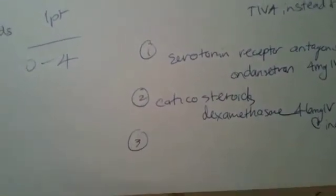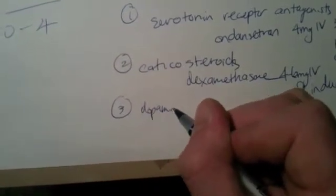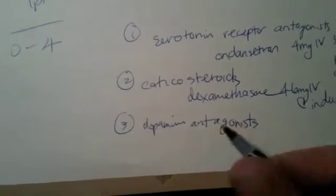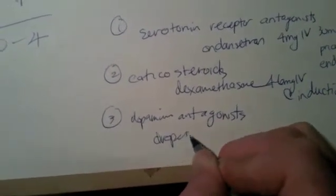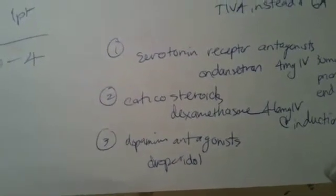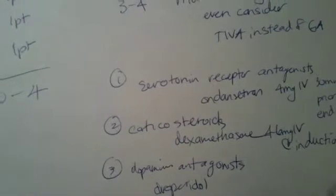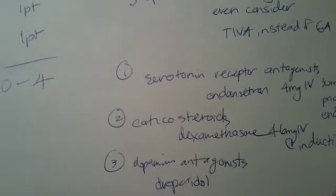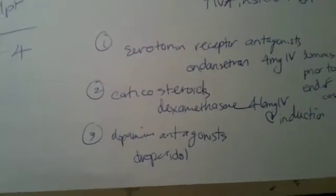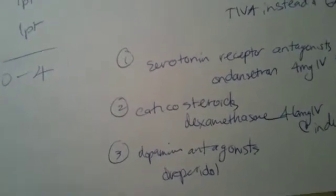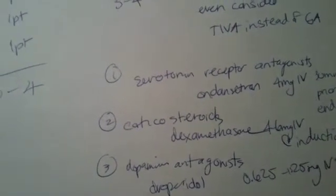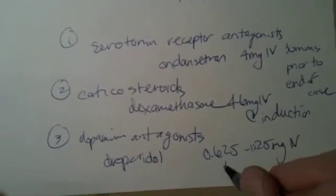A third choice are dopamine antagonists that work in the chemoreceptor trigger zone. The most common one used for this purpose is droperidol. We could do a whole other video on the tragic story of droperidol, but for all intents and purposes, it does have a black box warning for prolonging the QT interval. However, the evidence behind that is not fantastic. It's typically given in a dose of 0.625 to 1.25 milligrams IV, like ondansetron, towards the end of the case.